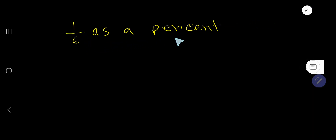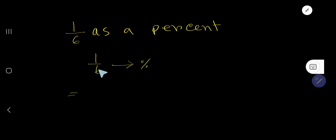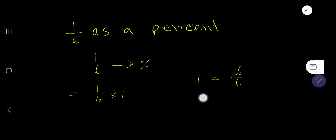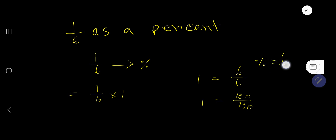We need to convert one over six as a percent. You can write one over six, and since percentage means one over hundred, you can multiply by hundred over hundred — that keeps the value the same.